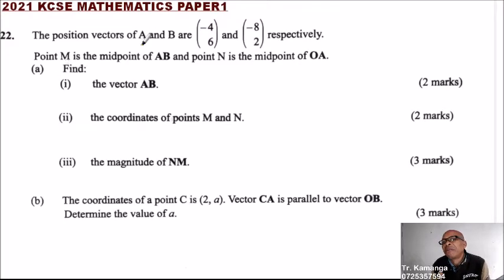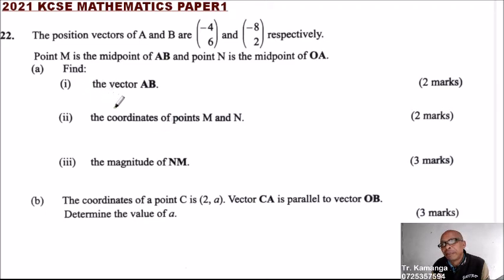Question number 22: the position vectors of A and B are (-4, 6) and (-8, 2) respectively. Point M is the midpoint of AB and point N is the midpoint of OA. For part a, find: roman numeral one, the vector AB. Before we start answering the question, it is good that we have a sketch to represent the information.